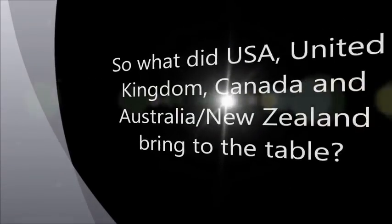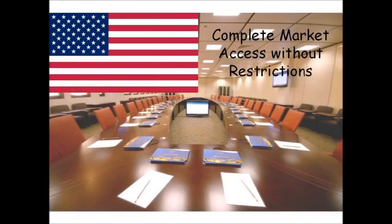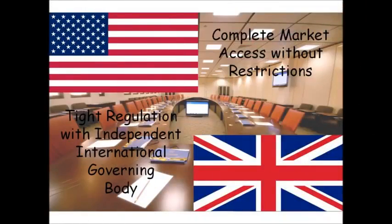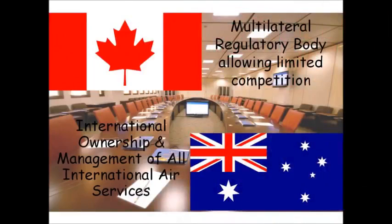So what did the USA, United Kingdom, Canada, and Australia with New Zealand bring to the table? To start with, the Americans wanted complete market access without any restrictions. The United Kingdom wanted tight regulations with an independent international governing body. Canada wanted a multilateral regulatory body that only allowed limited competition. Australia and New Zealand wanted international ownership and management of all international air services.